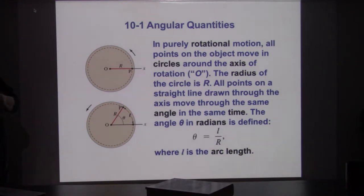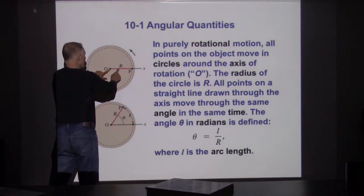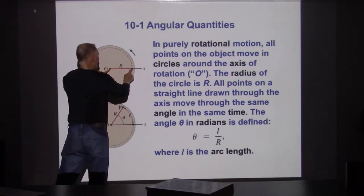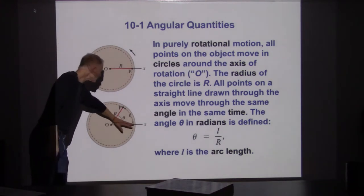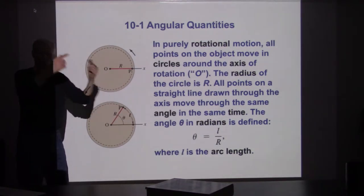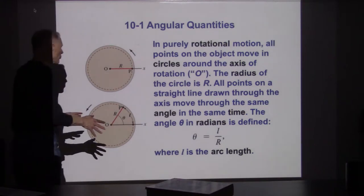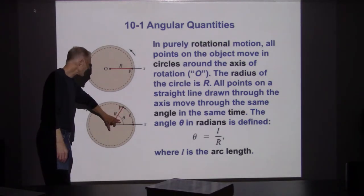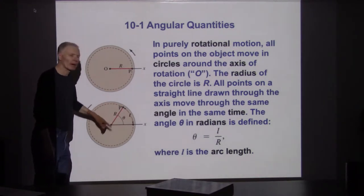All the points on a straight line drawn through the axis move through the same angle in the same amount of time. They're drawing a line between the axis and the point out here, and as this begins to rotate through an angle theta, that line all rotates together. So we've got a picture where it's gone through an angle. Angles are defined mathematically: an angle is defined as the arc distance L divided by R.